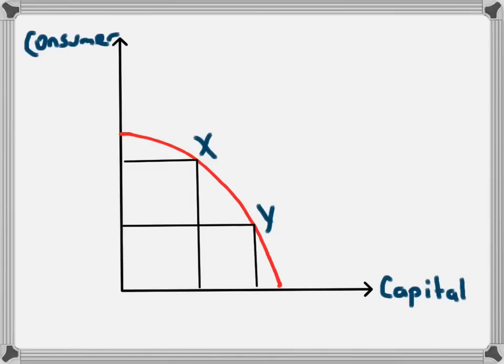We're going to look at the economy, and it could be producing at either point X or point Y. At point X, consumers are going to be better off in the short term because there are more goods and services for them to enjoy. If they were producing at point Y, the amount of goods available for consumers would fall.